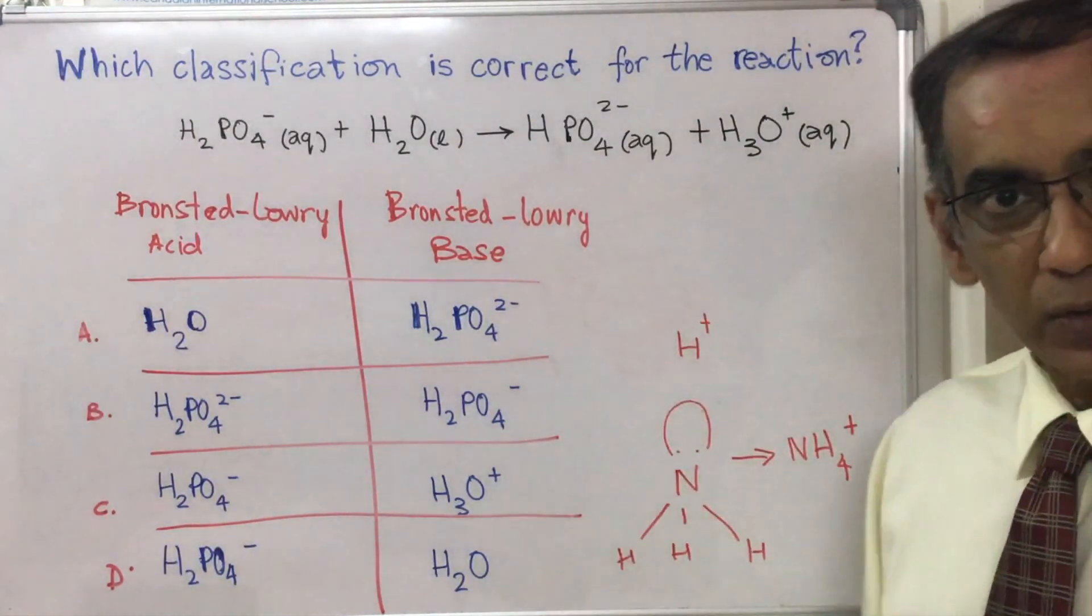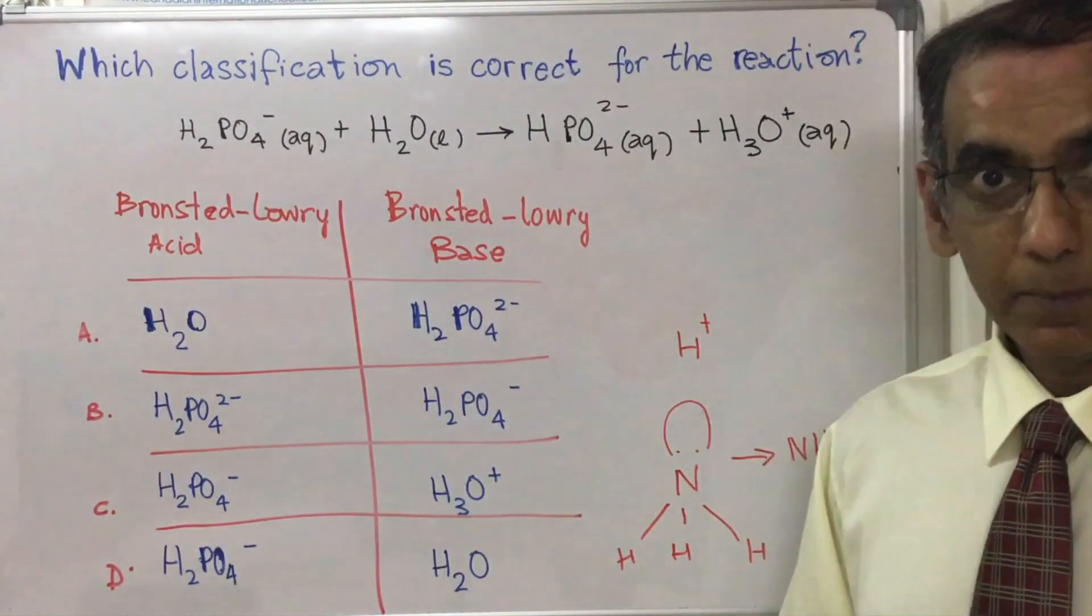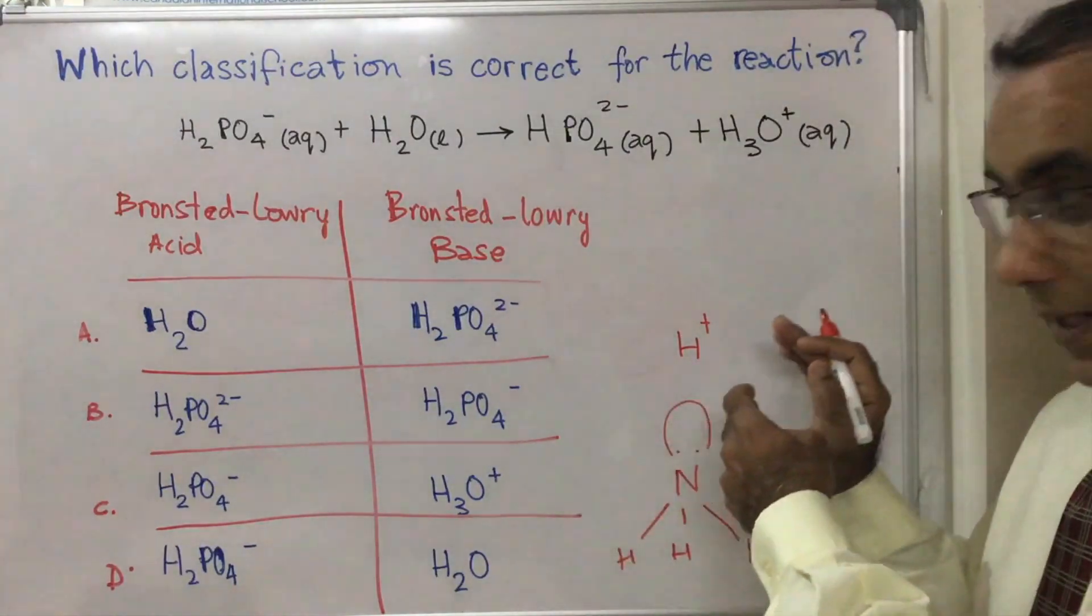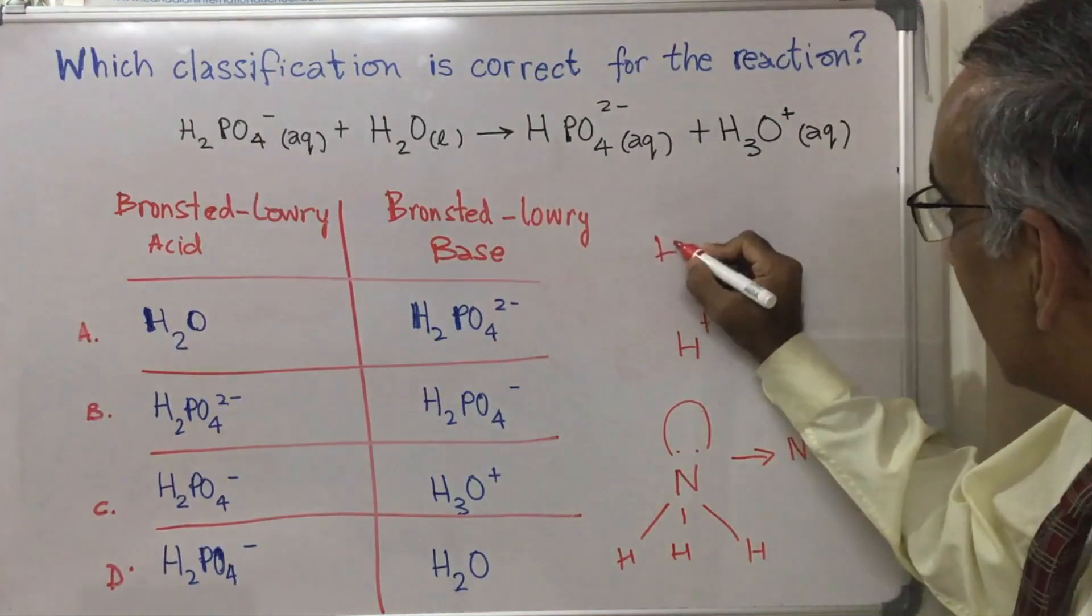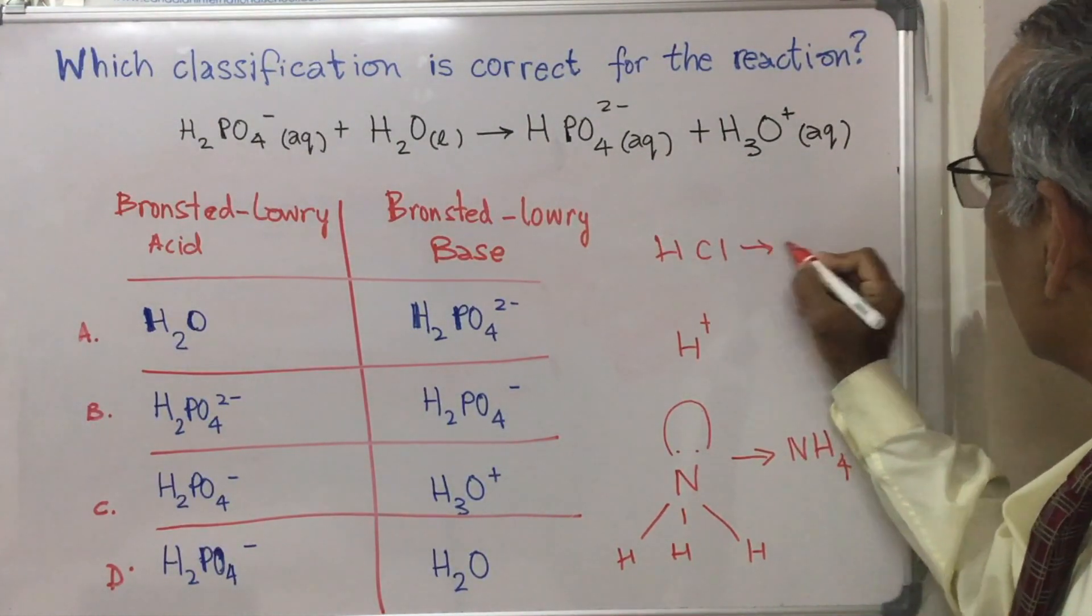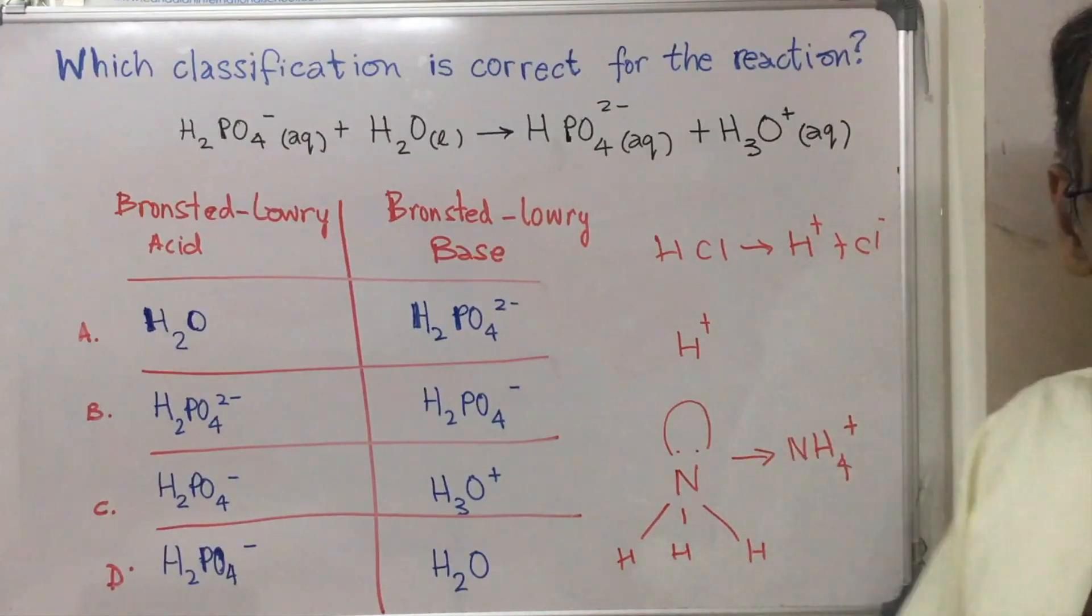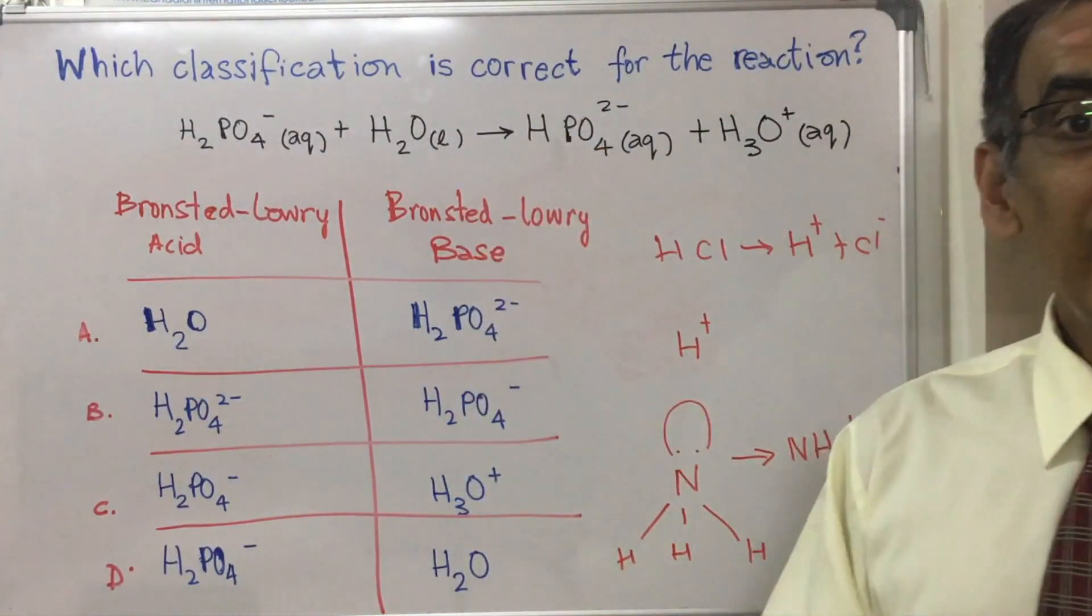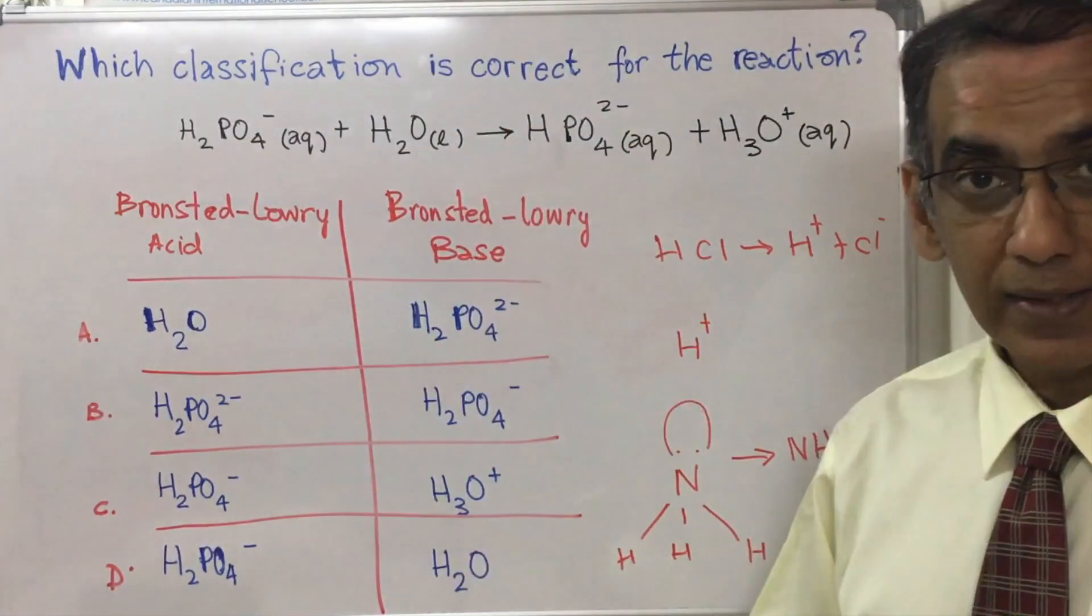But let's get back to this question which is quite a simple one actually, because bearing in mind that a Bronsted-Lowry base is a proton acceptor and a Bronsted-Lowry acid like HCl is a proton donor, then all we need to do is to look at this equation and to see if we can find what's accepting a proton and what's donating a proton.